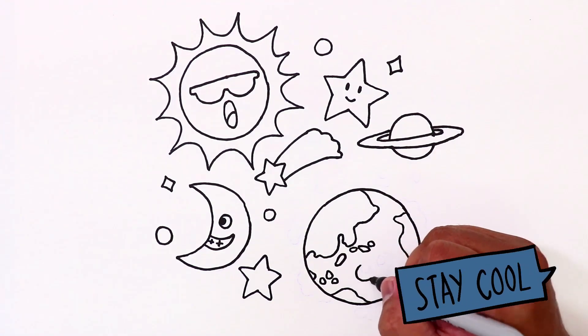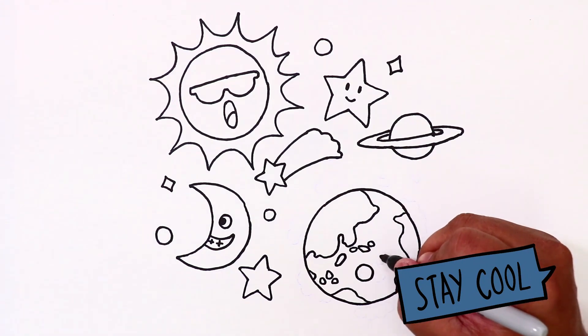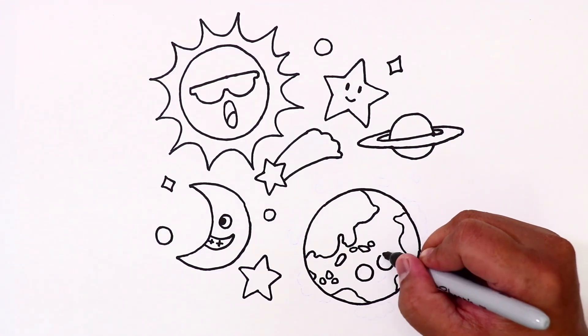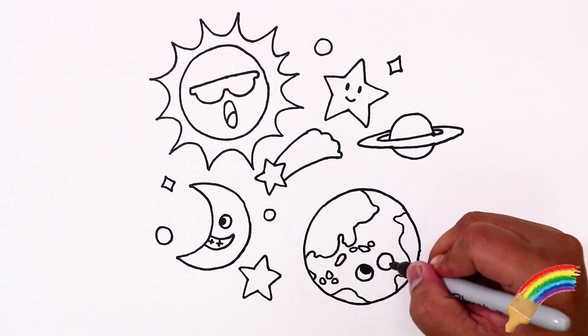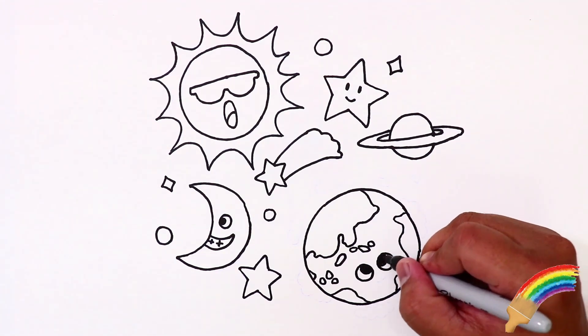But which planet is closest to the Sun? Do you remember that order I gave to you earlier? Well, Mercury is the closest planet to the Sun. The farthest? Neptune.